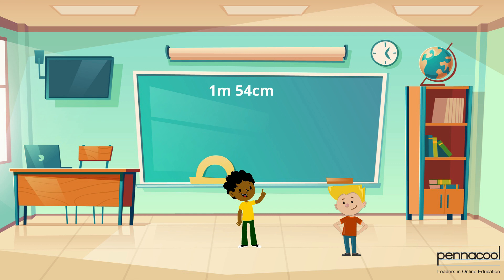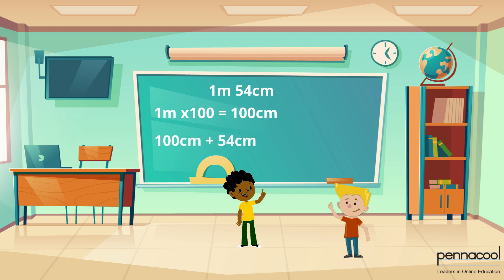Zion is unsure of what to do. Elijah gives him a hint: if one part is in meters and the other is in centimeters, try to represent both parts in centimeters. Zion looks at both parts of his height and decides to change the 1 meter to centimeters. 1 meter converts to 100 centimeters, making his height 100 centimeters and 54 centimeters. He then adds these to get a height of 154 centimeters.